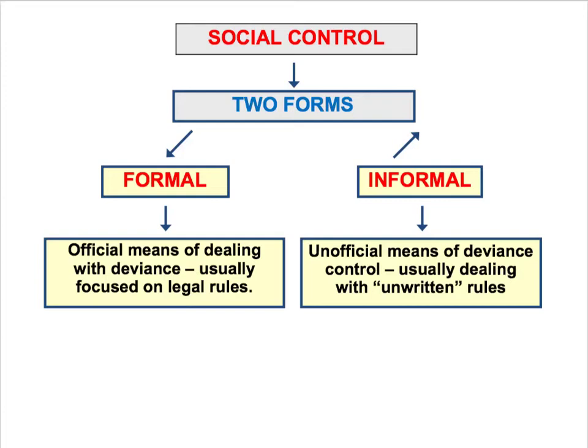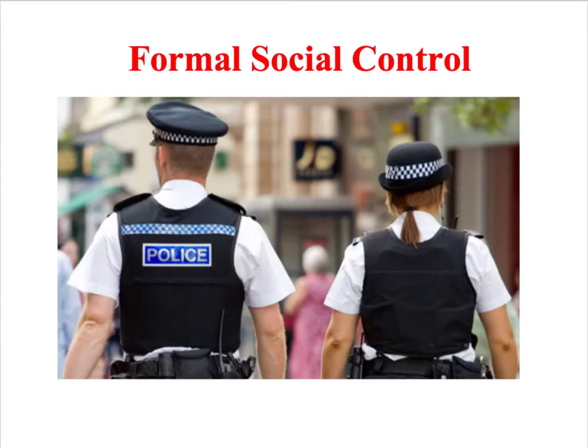Informal social control is usually focused on maintaining the dominant social norms in society, whereas formal social control is essentially about the criminal justice system. The main agencies of formal social control within our society are things like the police, the security services, the court system and the judiciary. In other words, formal social control is about maintaining the rule of law within society.